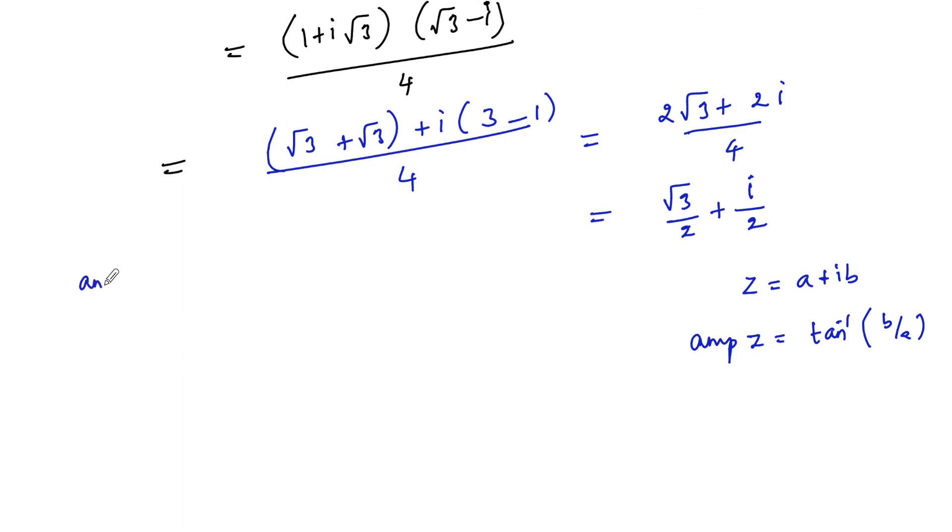We can write amplitude of z is equal to tan inverse of b upon a, that is 1 upon 2 divided by root 3 upon 2, which equals tan inverse of 1 by root 3.